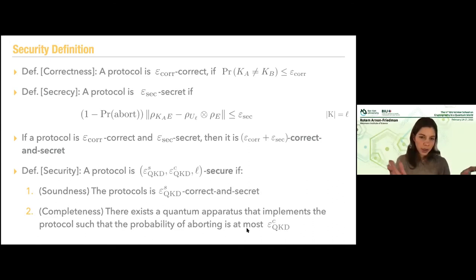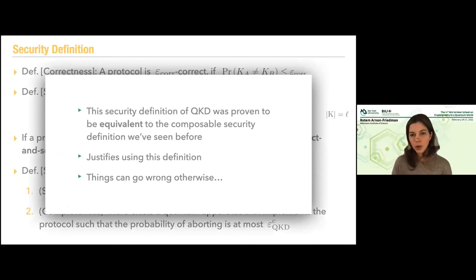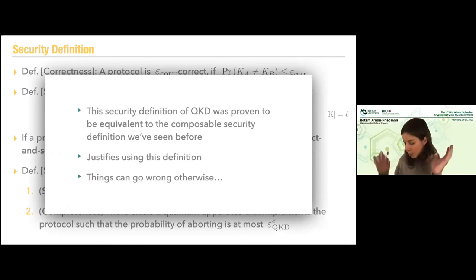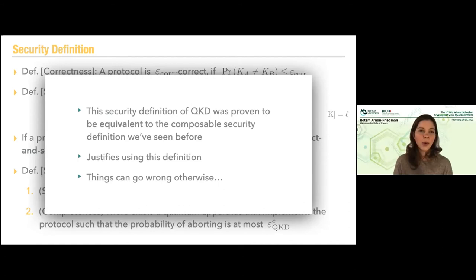This is a security definition, and importantly it was proven to be equivalent to the composable security definition I showed before. This is what justifies using this definition. If I want to care about composability, I should start with abstract cryptography and the composable security definition — but it turns out these two things are equivalent, which is why I'm allowed to work with this other security definition as well.